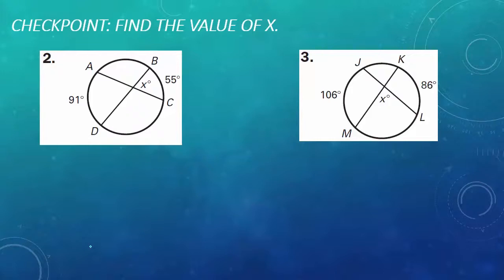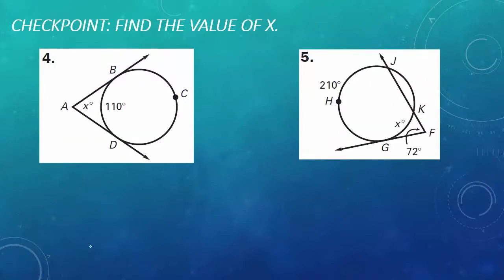Checkpoint problems 2, 3, 4, and 5 are yours. For each question, find the value of X. In problems 2 and 3, the chords are intersecting inside the circle. In problems 4 and 5, we have tangents and secants intersecting outside the circle. That's it from me — I'll see you all soon.